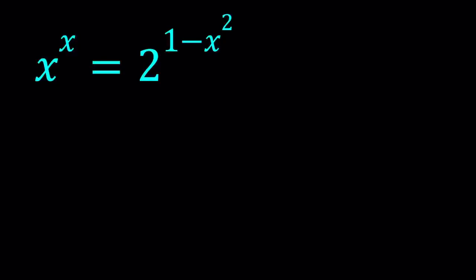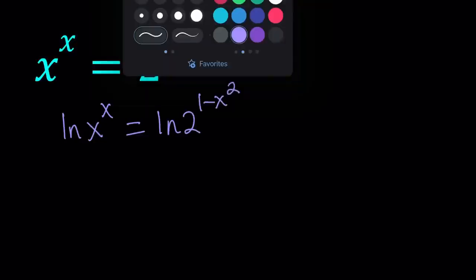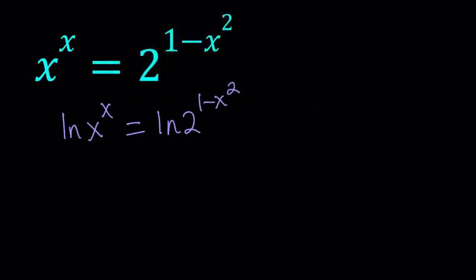Alright, great. So let's go ahead and start by ln-ing both sides. ln, by the way, is the natural logarithm, which is base e. So I'm going to ln x to the power x and ln 2 to the power 1 minus x squared. Now by using properties of logs, we can move these powers to the front. So this becomes x ln x equals 1 minus x squared times ln 2.